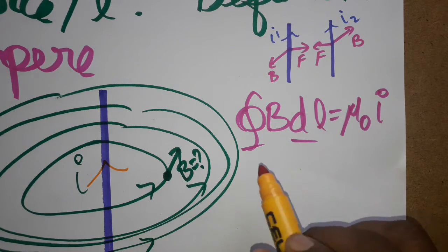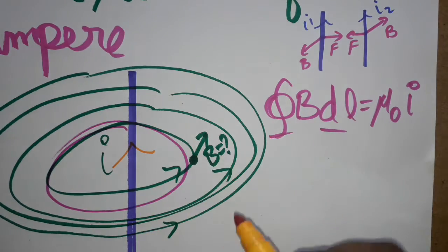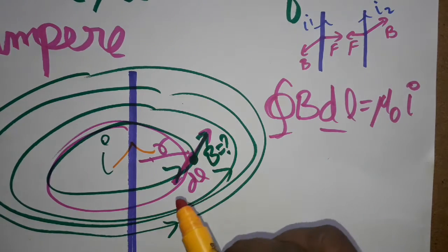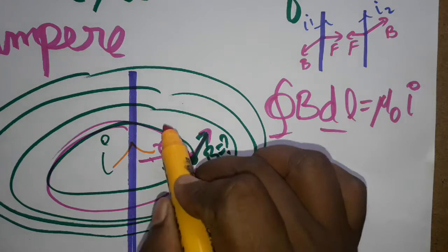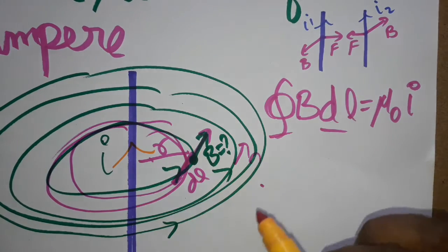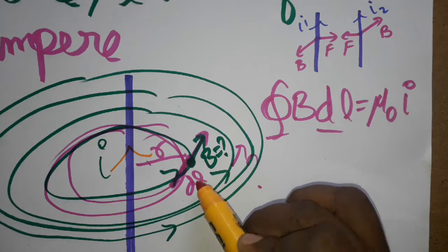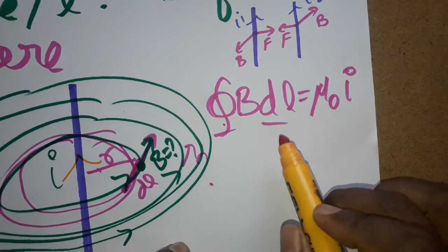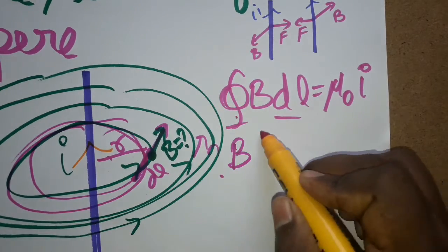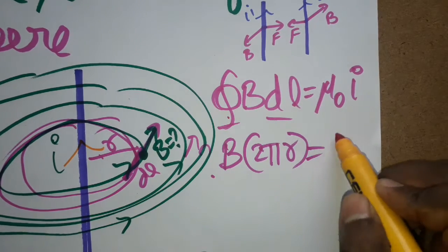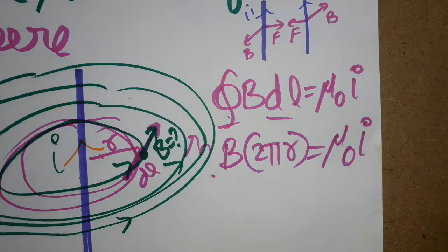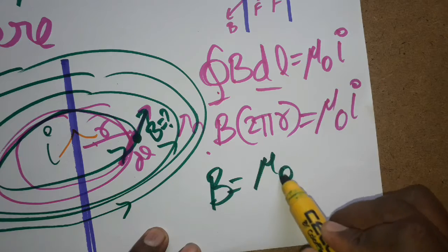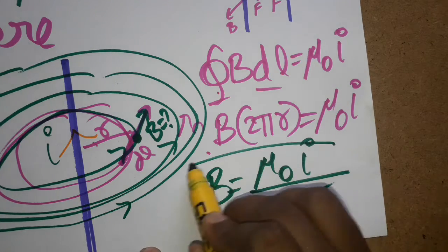It is a closed surface, a circle, taken at radius r. The integration of B·dl equals mu-naught times i. The integral of dl along the circle equals 2πr, so B times 2πr equals mu-naught times i. Therefore, the magnetic field produced due to a straight current-carrying conductor is B equals mu-naught i divided by 2πr.